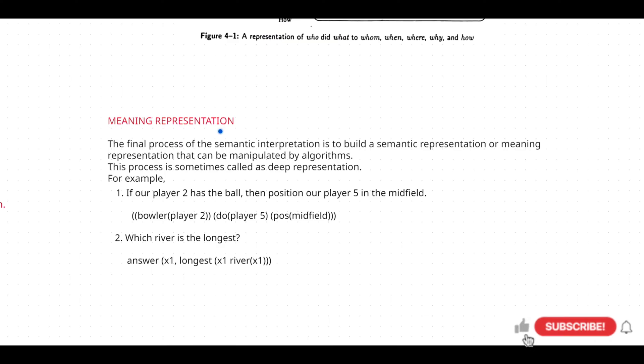What is meaning representation? The final process of semantic interpretation is to build a semantic or meaning representation that can be manipulated by algorithms. In the previous requirements, we have identified word senses, events, entities, and the predicate argument structure.